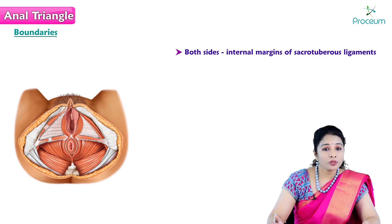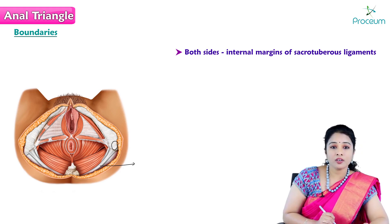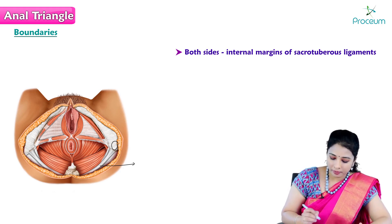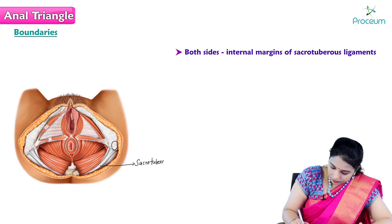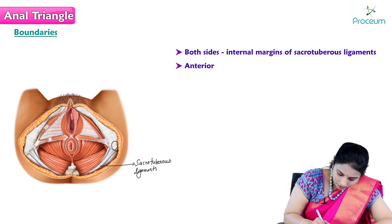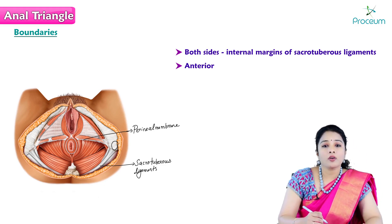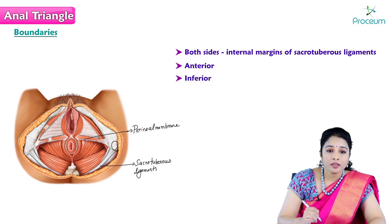The anal triangle is formed on both sides by the internal margins of the sacrotuberous ligaments. These ligaments run posteriorly from the sacrum towards the ischial tuberosity, on either side of the sacrum. Anteriorly, the boundary is formed by the superior edge of the perineal membrane, indicated by this white line.